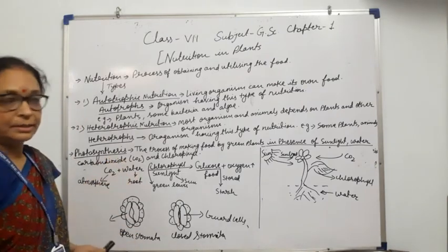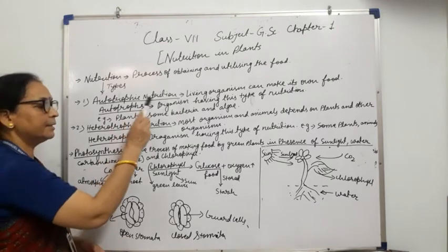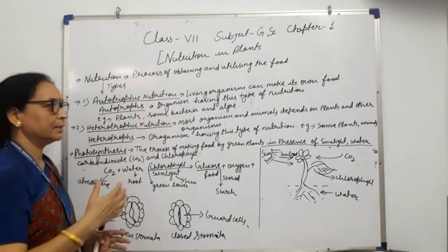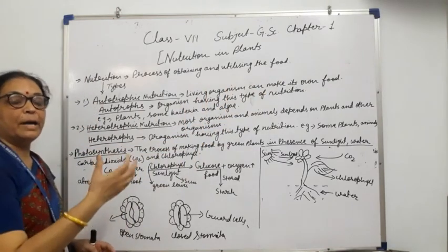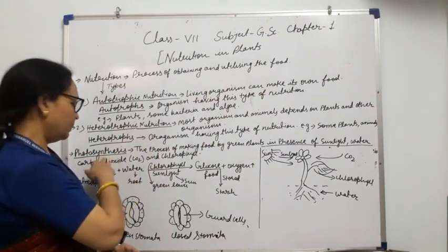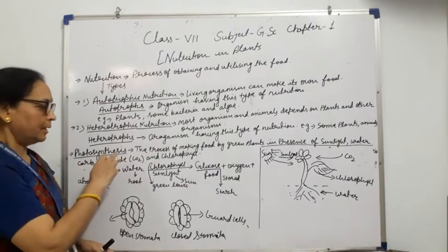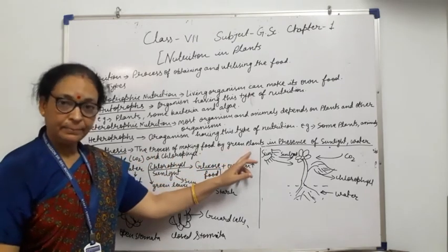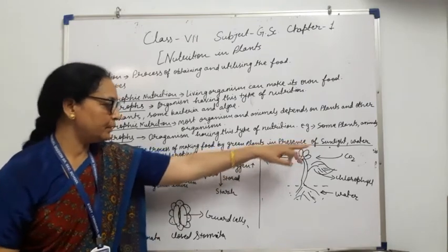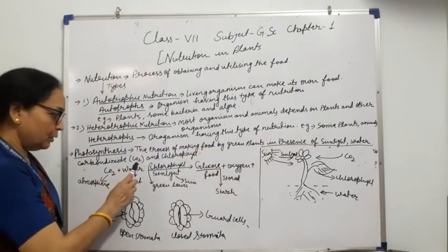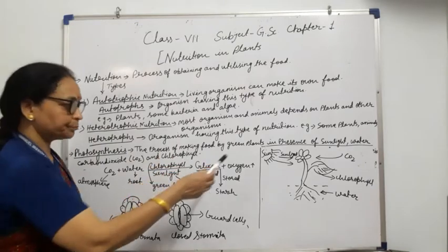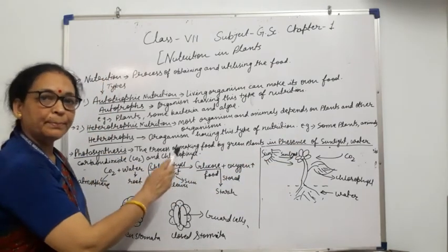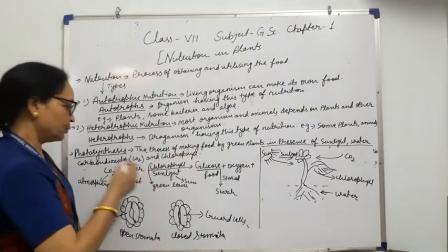The next term is photosynthesis, which is related to autotrophic nutrition. Autotrophs can make their own food by the process of photosynthesis. Photosynthesis is the process of making food by green plants in the presence of sunlight, water, carbon dioxide (CO2), and chlorophyll.